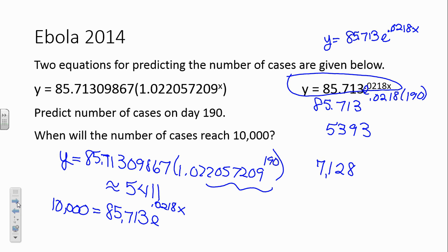So if we have 10,000 equals that, what are we going to do to solve that? We're going to divide by 85.713. And that's equal to E to the 0.0218X. Now what do we have to do to both sides?